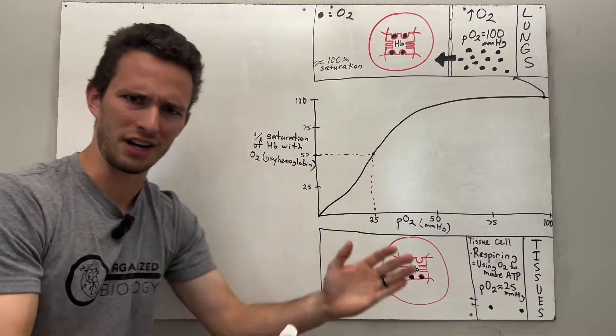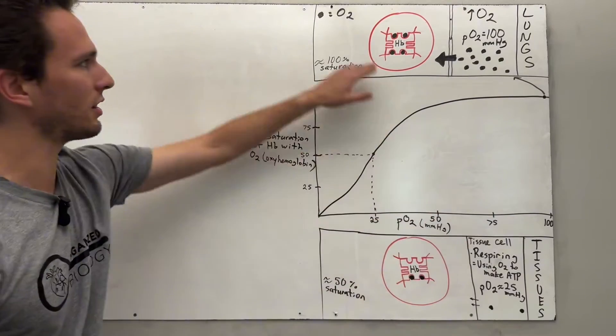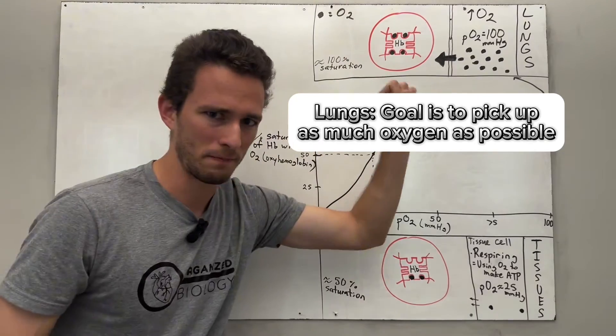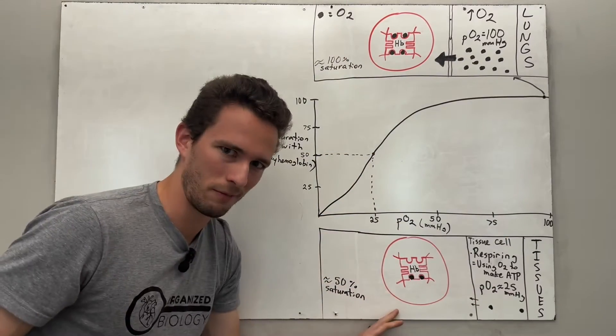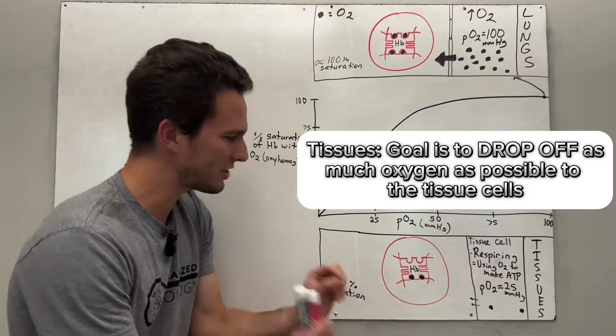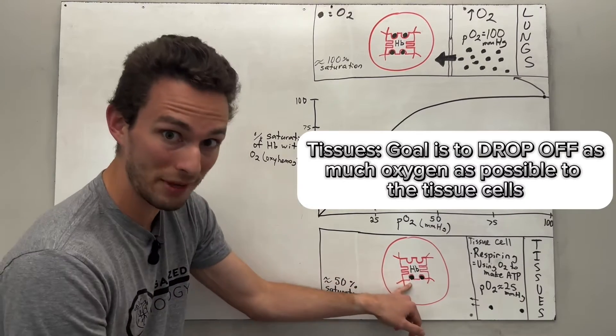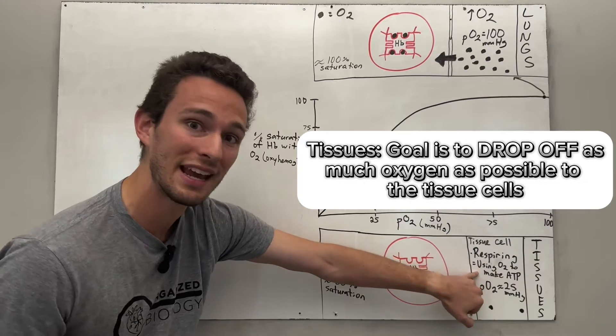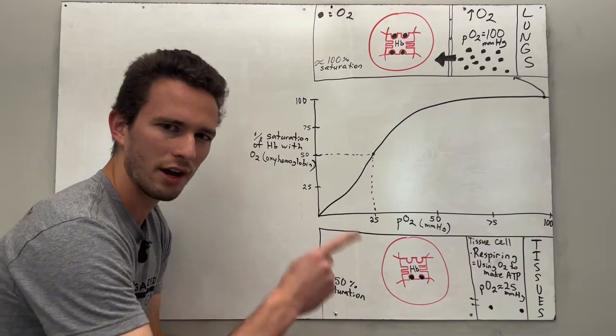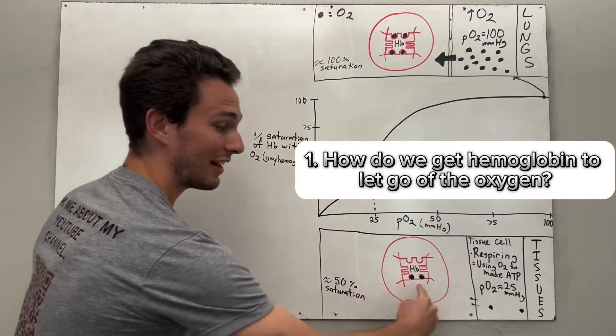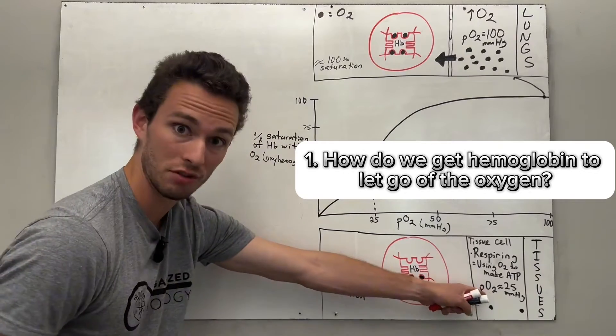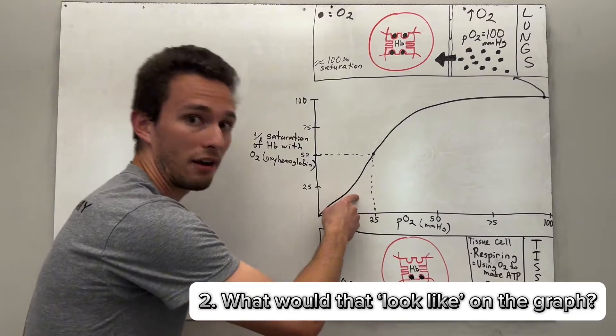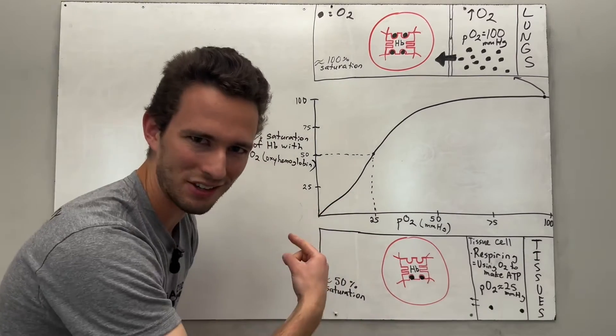But what's the goal of this whole process, right? Well, you know that at the lungs, the goal is to saturate our hemoglobin full of oxygen as fast as possible. Whereas at the tissue, what's the goal? Well, at the tissues, the goal is actually to take the oxygen from hemoglobin and give it to the cells, right, because the cells need it to make ATP. So there's two questions here. Number one, how do we get hemoglobin to let go of that oxygen to give it to the tissues? And then number two, what would that look like on the graph? Let's get into that next.